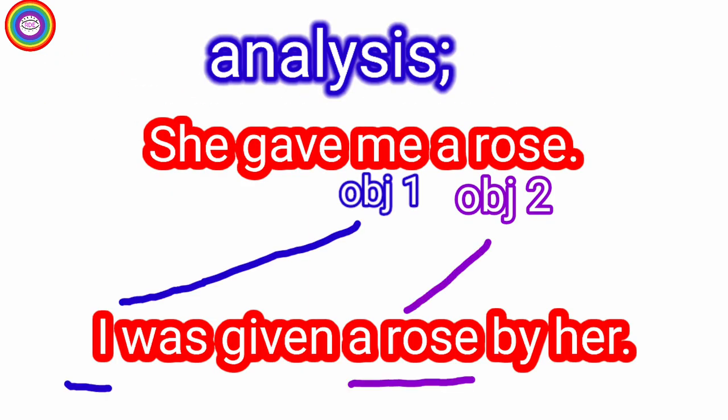Analysis can be made like this way. She gave me a rose. Me is object 1, a rose is object 2. Here we take object 1, me, as the subject of the sentence. Me changes into I. I was given a rose is object 2 and by her. She is changed into by her. And she gave me a rose is changed into I was given a rose by her while changing active into passive voice.